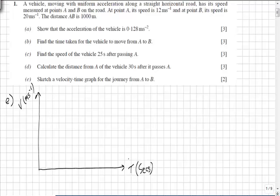Now this is a fairly straightforward velocity time graph. We know that the vehicle started at 12 meters per second and we know that it ended at 20 meters per second when it passed point B which was a thousand meters away and the time it took to do that in question part B was 62.5 seconds.